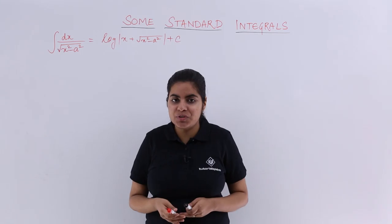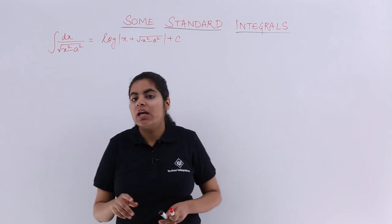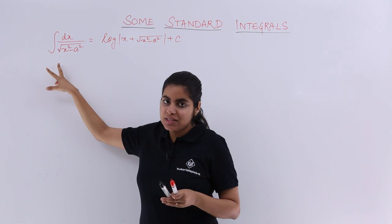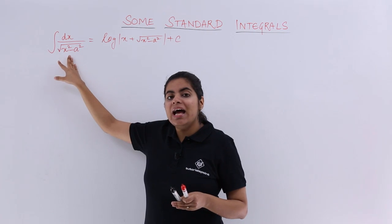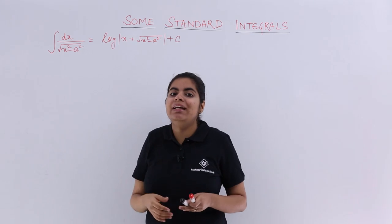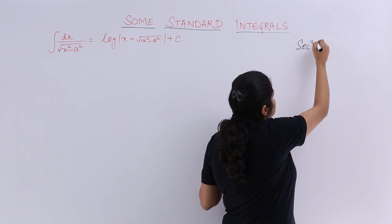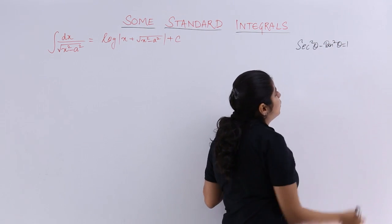So let's substitute my x as a secant theta. Why a secant theta? Because if I take something as common I have secant square theta because of x square, and secant square theta minus 1 would be there and that would make it tan square theta. At least we have some formula, right? So we will be using the formula of secant square theta minus tan square theta is equal to 1, and let's see how this can be beneficial.